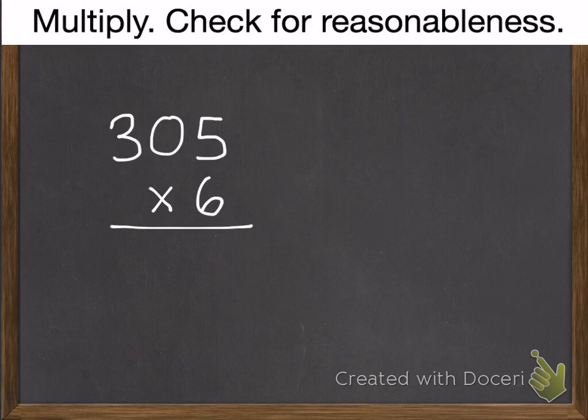5 times 6 is 30. 6 times 0 is 0, plus 3 is 3. 6 times 3 is 18. So 1,830 is your answer.